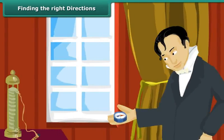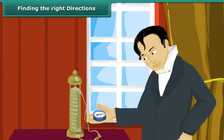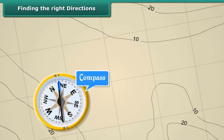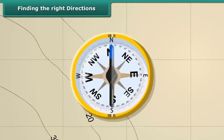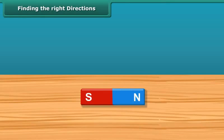We all know that to find directions, we use a compass. This compass has a needle that keeps moving in all directions, but when steadied, always points to the north-south direction. This helps us in finding directions accurately. This is why we need to mark the poles of a magnet.